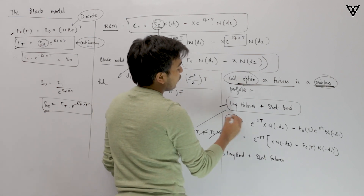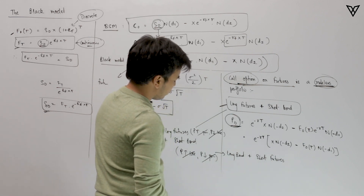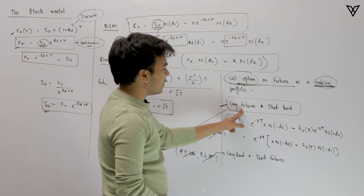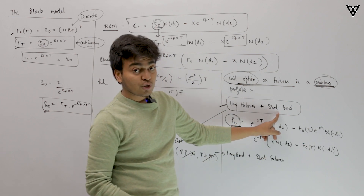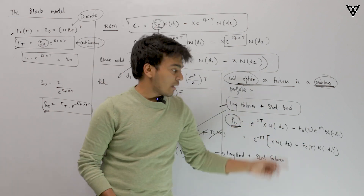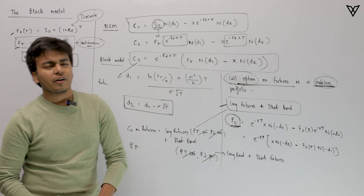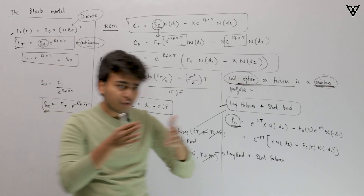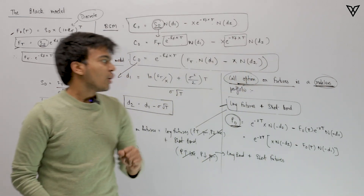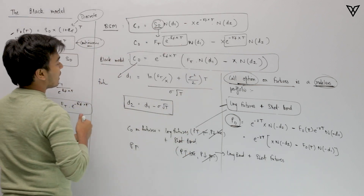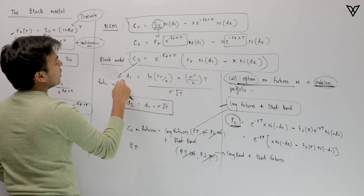In the same way, you can calculate the put option value. You simply take the opposite positions: instead of long futures you take short futures, and instead of short bond you take long bond. You can similarly establish the risklessness of this put option portfolio. So when taking a call option on a futures contract, there is generally no risk involved. The calculations of d1 and d2 also change slightly — we now include F(t) in the equations for d1 and d2.